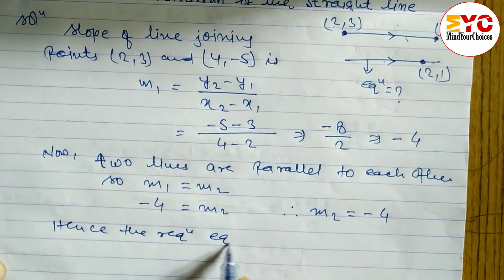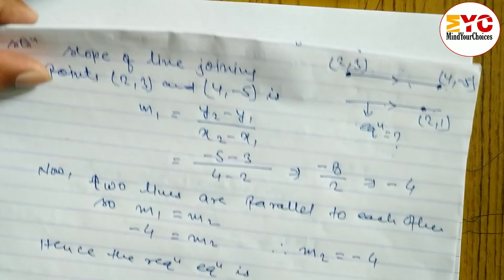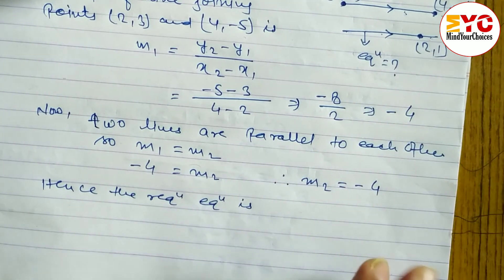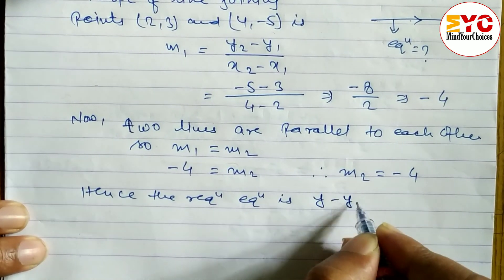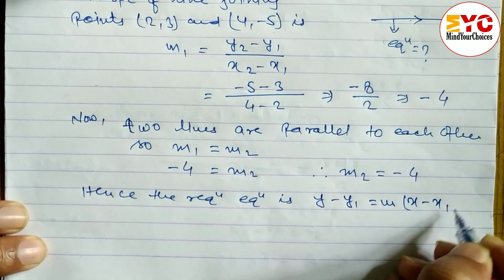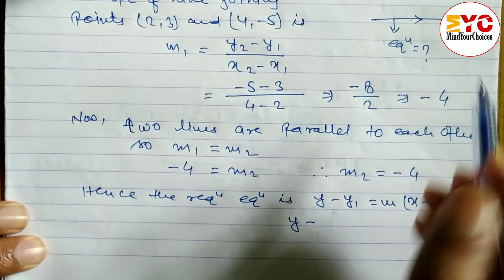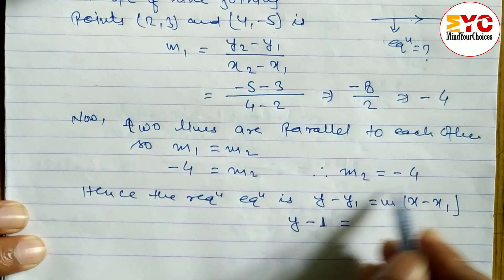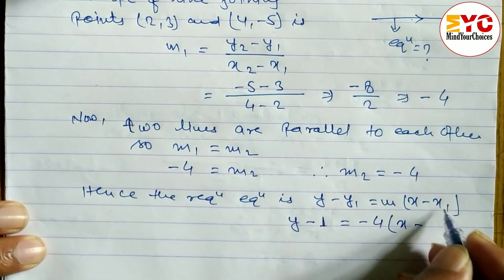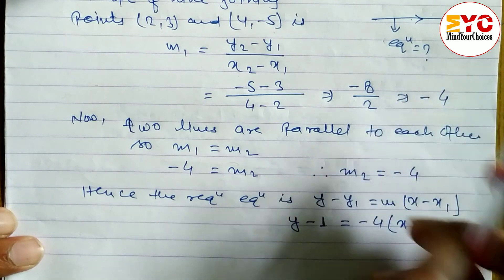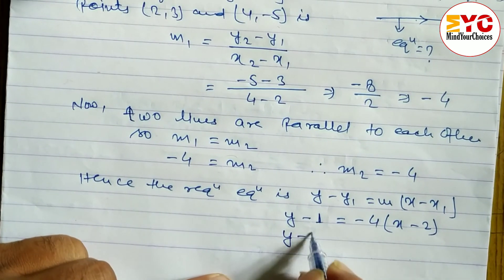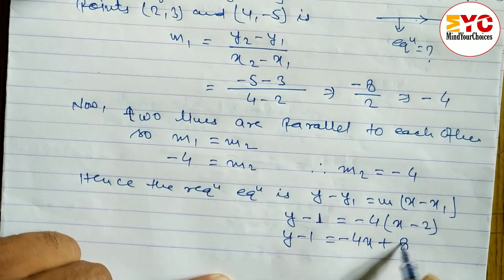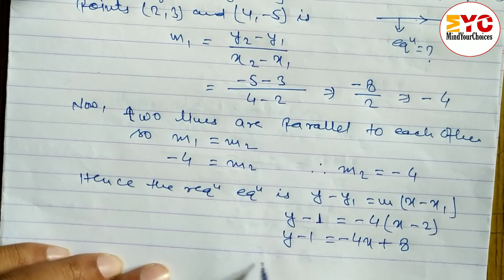Now we use the one-point formula from class nine: when one point and one slope are known, the equation is y minus y1 equals m times (x minus x1). The required line passes through (2, 1), so x1 equals 2 and y1 equals 1. The slope m2 is minus 4. Substituting: y minus 1 equals minus 4 times (x minus 2).